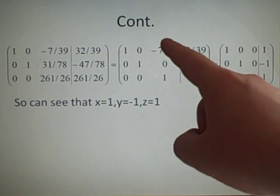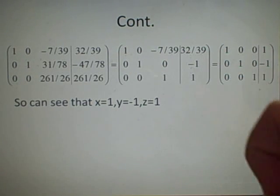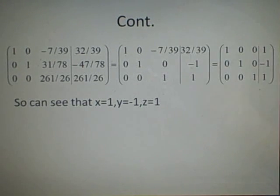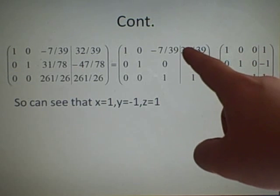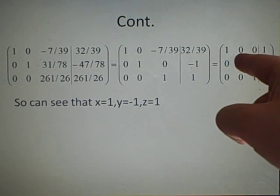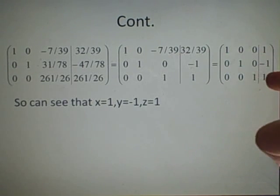Then we've got the very top one. If we add 7 39ths of this value, it'll give us 0 here. And it'll also give us 1 here. So we've got our values here of x is 1, y is minus 1, and z is 1.